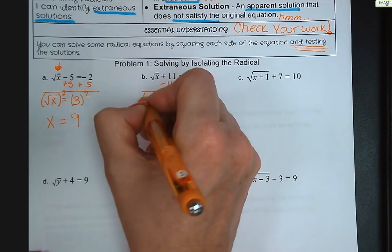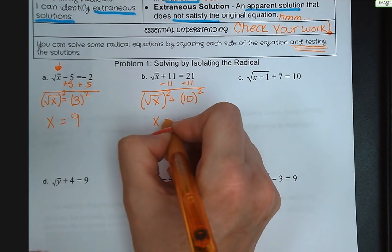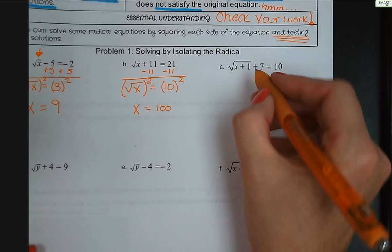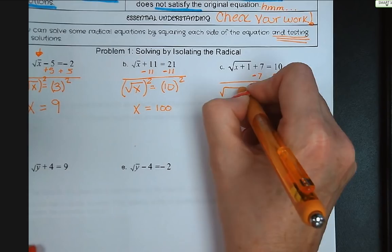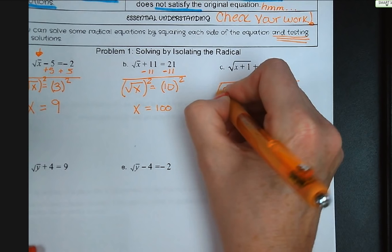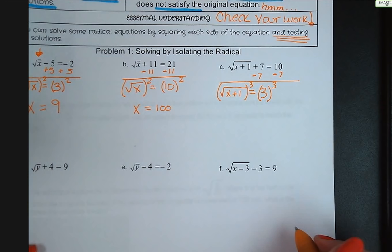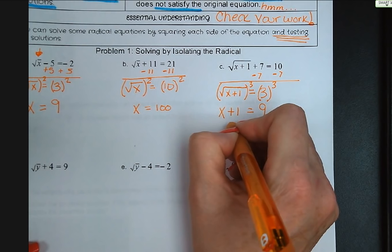Square both sides and x equals 100. For letter c, we isolate the radical by subtracting 7 from both sides, giving us the square root of x plus 1 equals 3. Square both sides and we get x plus 1 equals 9. Subtract 1 from both sides and x equals 8.